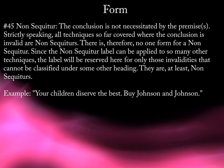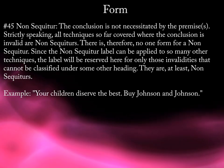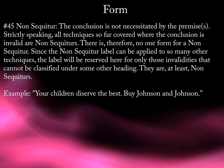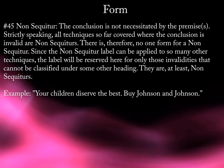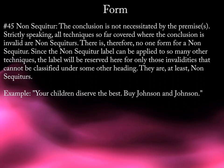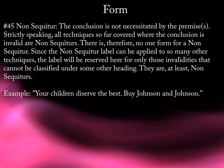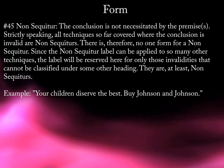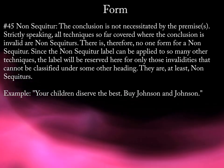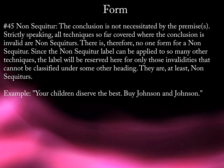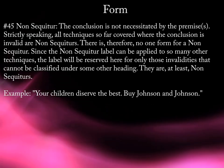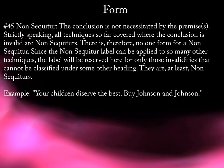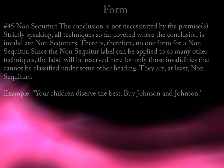45. Non-Sequitur. The conclusion is not necessitated by the premise or premises. Strictly speaking, all techniques so far covered where the conclusion is invalid are non-sequiturs. There is, therefore, no one form of a non-sequitur. Since the non-sequitur label can be applied to so many other techniques, the label will be reserved here for only those invalidities that cannot be classified under some other heading. Example: "Your children deserve the best. Buy Johnson & Johnson."